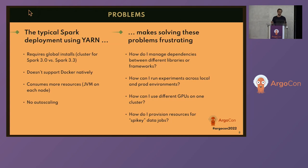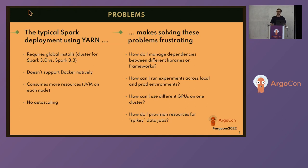Using Docker natively is another big advantage of moving to Kubernetes. On Yarn, you have to do a lot of legwork to containerize your applications and take advantage of the faster dev experience and improved dependency management that Docker offers. There's also a resource benefit — instead of running a JVM on each node, you can take advantage of Kubernetes pods. Finally, autoscaling is a big advantage: you can use different CPU or GPU thresholds on the same cluster and adapt to spiky data jobs depending on the workload you need.